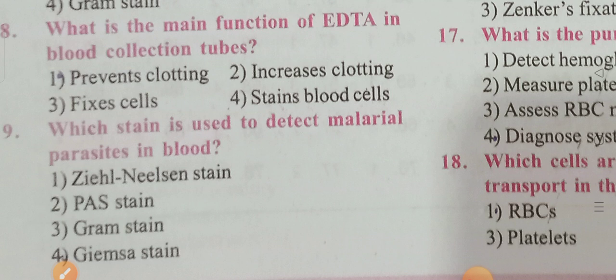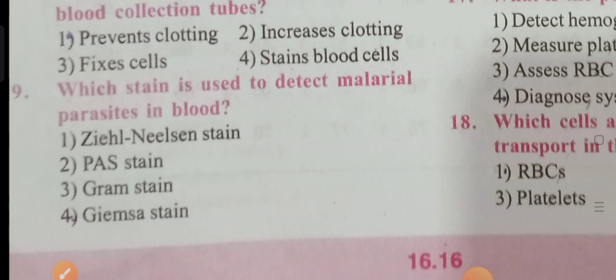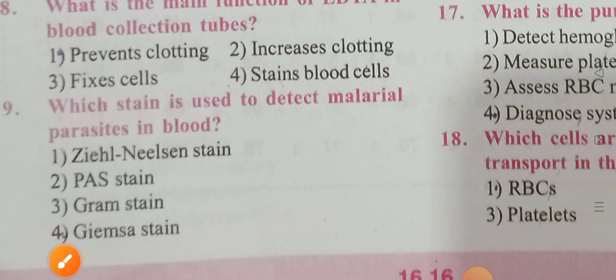Next: which stain is used to detect malaria parasites in blood? Options are Giemsa stain, Ziehl-Neelsen stain, PAS stain, and Gram stain. Option 4 is the correct answer — Giemsa stain.